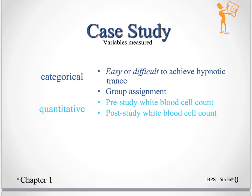The group assignment, which treatment they got, that was a categorical variable. You put them into three different groups. On the other hand, the quantitative variables were the white blood cell counts, both before and after. Because those are numbers, and you could average those, you could add them. It makes sense to do arithmetic with them.